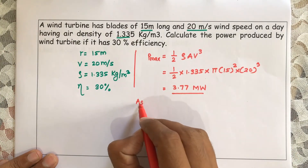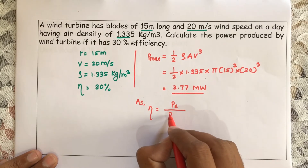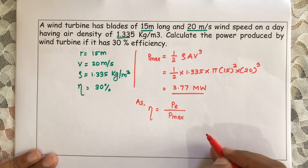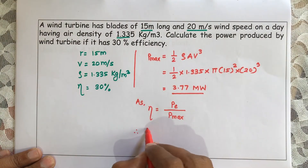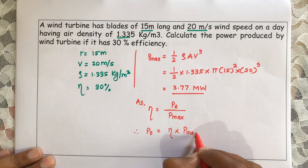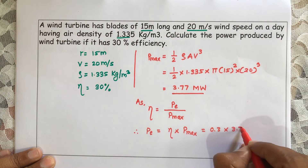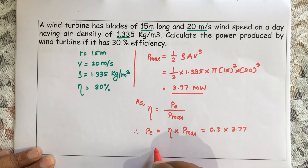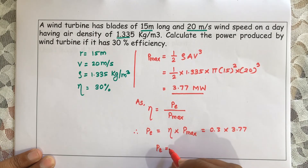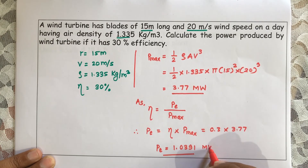Efficiency = extracted power / maximum power developed by the wind. Therefore, extracted power = efficiency × P_max = 0.3 × 3.77 = 1.0391 megawatt.